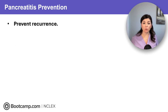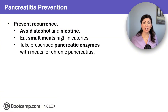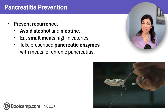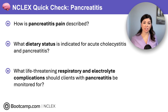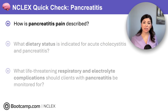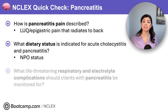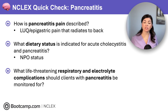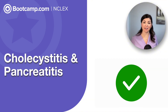Teach clients to prevent recurrence of pancreatitis: avoid alcohol and nicotine, eat small high-calorie meals, and take prescribed pancreatic enzymes with meals to replace what the pancreas can't produce, improving digestion and nutrient absorption. NCLEX Quick Check: Pancreatitis pain is left upper quadrant or epigastric pain radiating to the back. NPO status is indicated for both acute cholecystitis and pancreatitis, as eating stimulates the gallbladder and pancreas. Life-threatening complications to monitor for include ARDS and hypocalcemia. You are now ready for NCLEX questions on cholecystitis and pancreatitis.